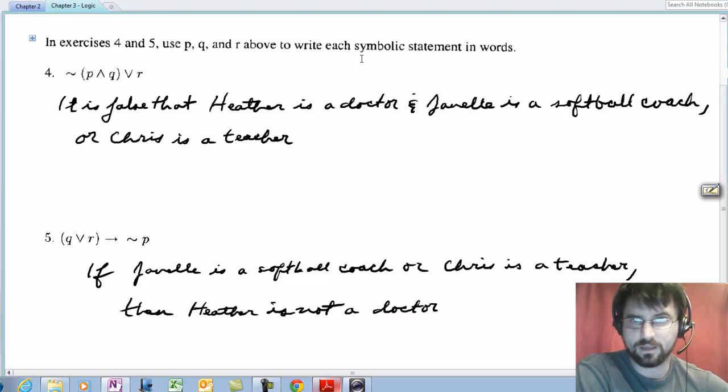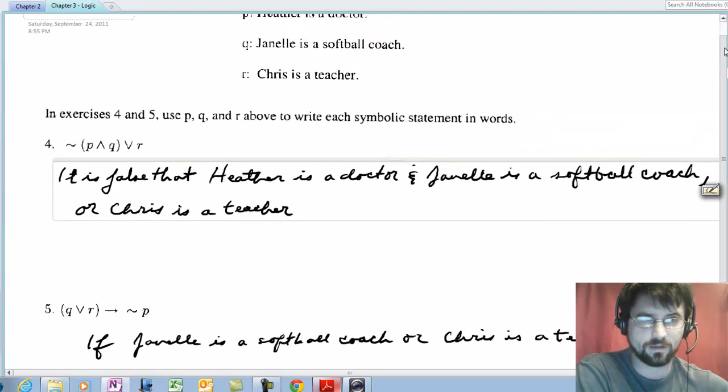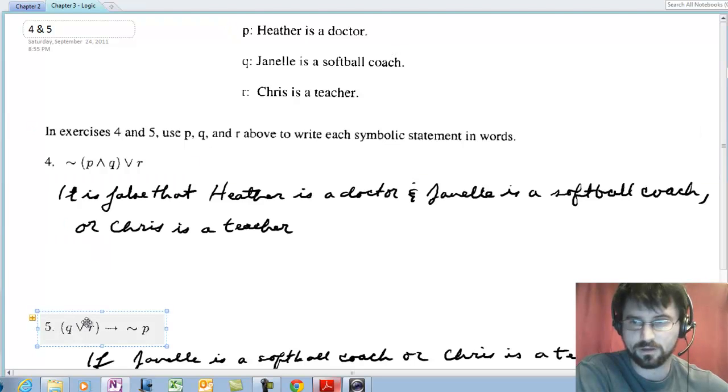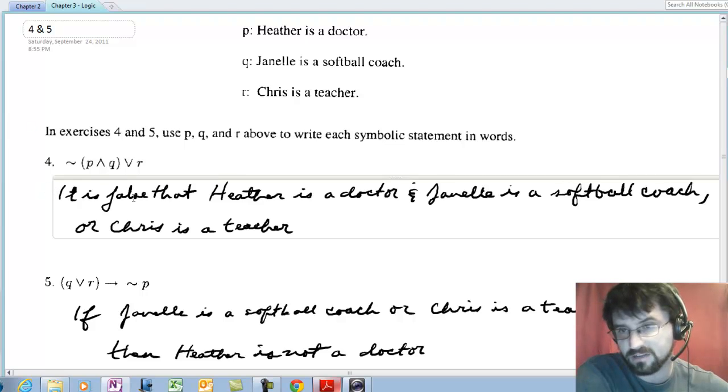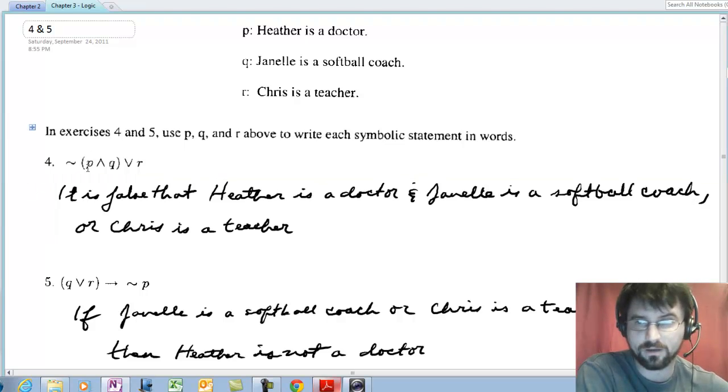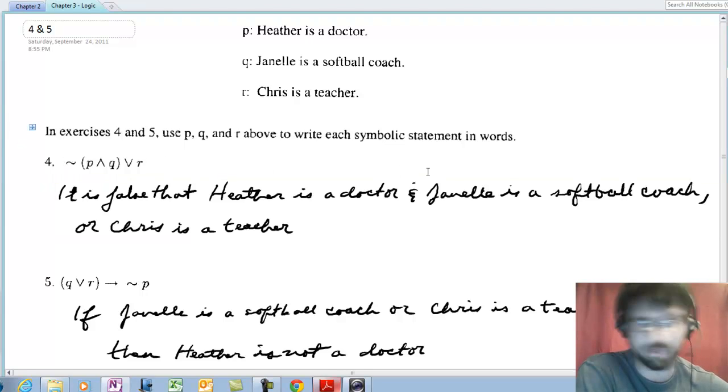The next one says use P, Q, and R above to write each statement in words. So we're still dealing with these here. We still have Heather is a doctor, Janelle is a softball coach, and Chris is a teacher. When I see a negation in front of a parenthesis, I translate that as it is false that. It is false that Heather is a doctor and Janelle is a softball coach, and I put the comma to show that the grouping has ended. Or Chris is a teacher. If I forget the comma, then I'm assuming I'm negating everything that follows, and that is not what number four is indicating I should do.